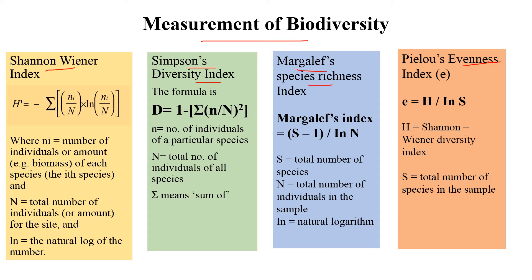The Shannon-Wiener diversity index is straightforward. Using any quadrat or sampling technique, you need to know the total number of species and the total number of individuals of each species. The formula is H' = −Σ(ni/N) ln(ni/N), where ni is the total number of individuals of a particular species and N is the total number of individuals in the sample. Detailed calculation with examples will be covered in a later video.